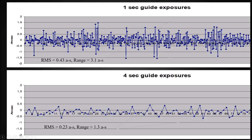You might think: just use really long exposure times — not four seconds, make it ten. The problem is most mounts can't go even ten seconds without significant tracking problems you really do need to correct for. You have to find a balance between too short and too long, depending on your mount's capability. One to two second guiding exposures are pretty typical and usually effective on most common mass-produced mounts. For very high-end mounts, you can stretch this out to five or six seconds, maybe as long as ten — but most of us won't have that luxury.